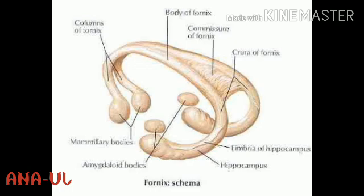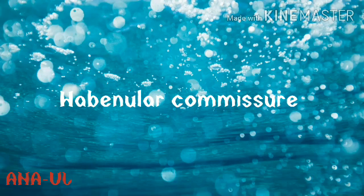The fimbria forms the posterior column or crus of the fornix, arching below the corpus callosum. The two crura then come together in the midline to form the body of the fornix. The two crura are interconnected by fibers passing from one to the other — the hippocampal commissure or commissure of the fornix — which joins the two hippocampi. The anterior end of the body of the fornix divides into anterior columns or pillars, each of which turns backwards just in front of the interventricular foramen and passes through the hypothalamus to reach the mammillary body.